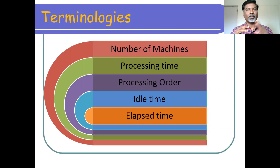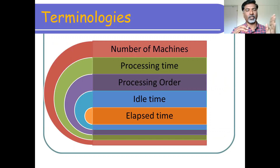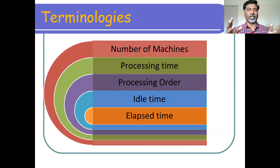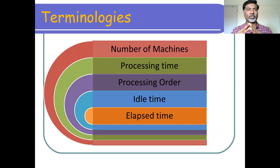Processing order means in what order we have to process the jobs — how the jobs come into the workstation. There are methods like shortest processing time, earliest due date, or first come first served. You have to decide what the processing order will be.